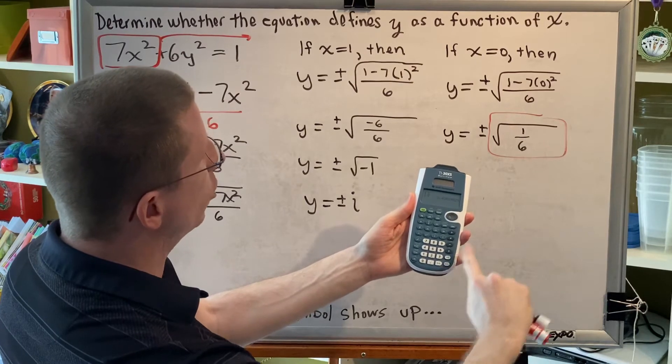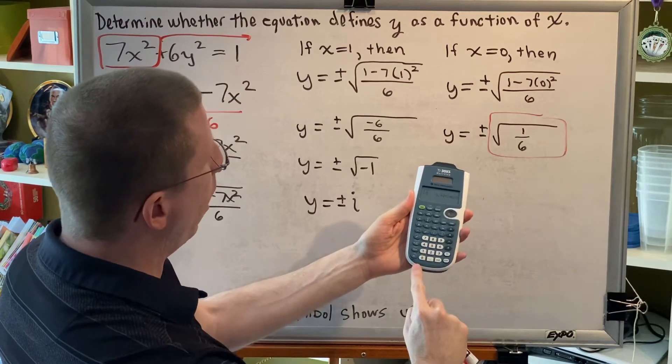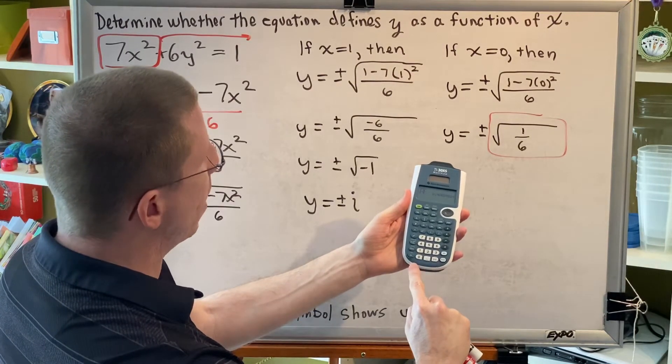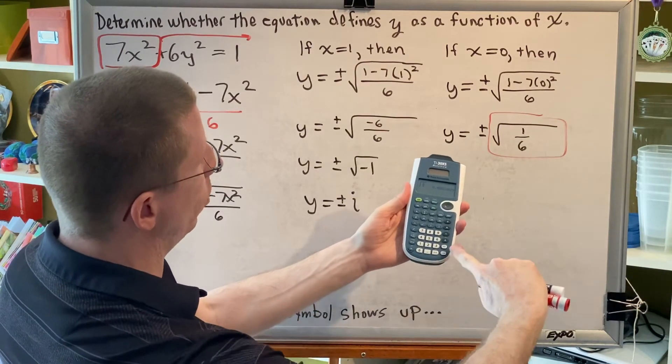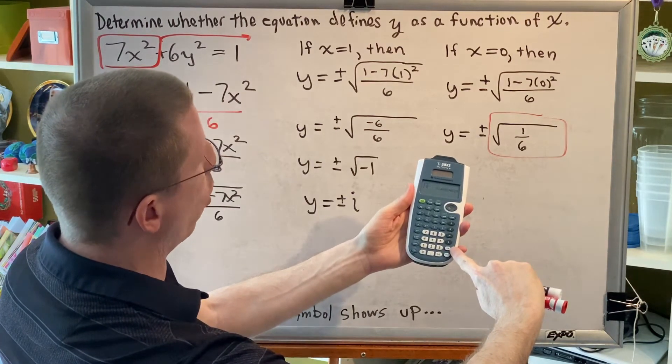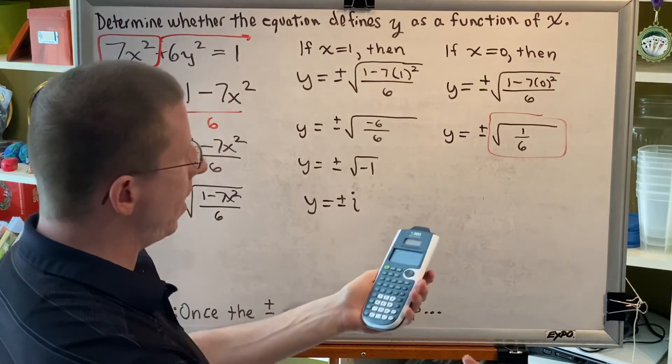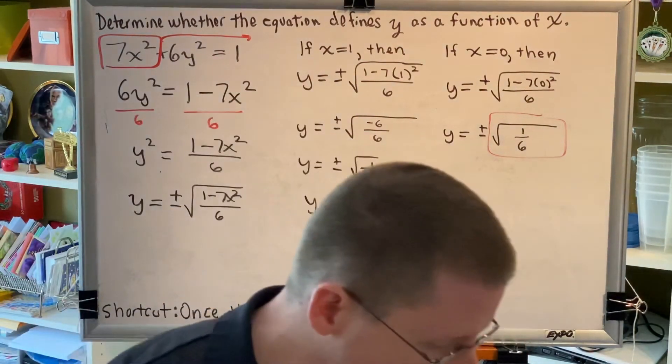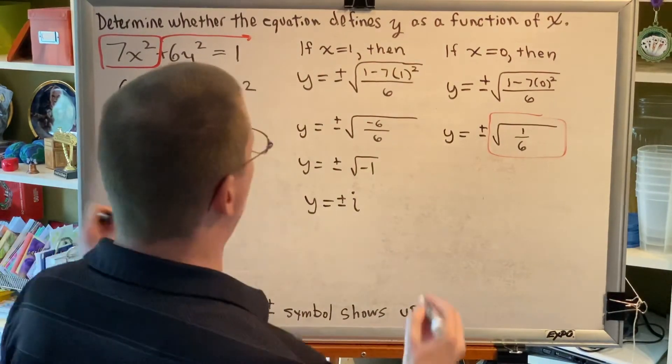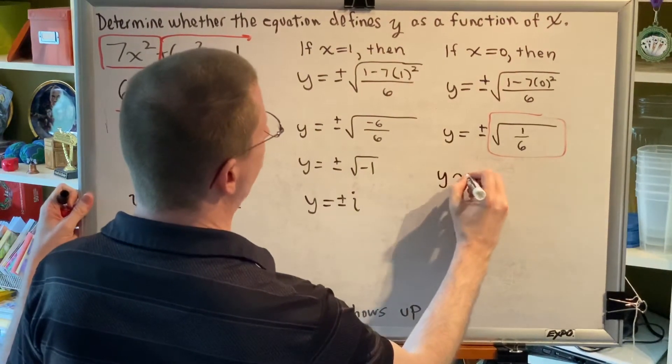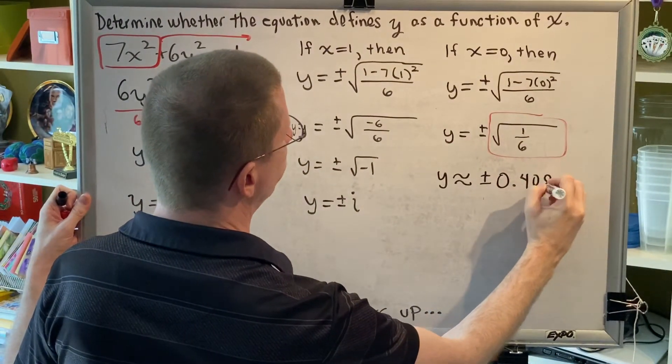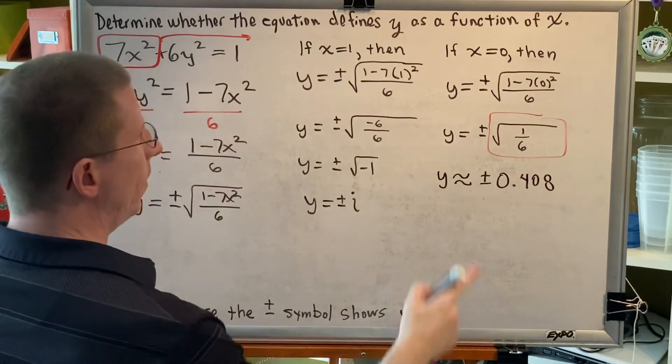Some calculators will give you a decimal value. Others will simply repeat what you entered back. So, if you get something that's not a decimal that you want to convert to a decimal, you just have to hit the little arrow arrow button that's shown here in the lower right corner. So, what I see here is that we have gotten a decimal approximation, and this radical is approximately equal to 0.408. So, y ≈ ±0.408. This is a real number.